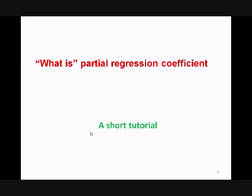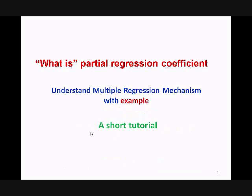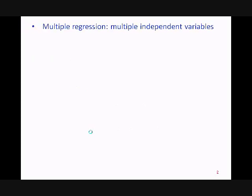Here we are going to learn what is partial regression coefficient. We are going to understand the mechanism of multiple regression with the help of an example. As the name suggests, multiple regression means when you have multiple independent variables.